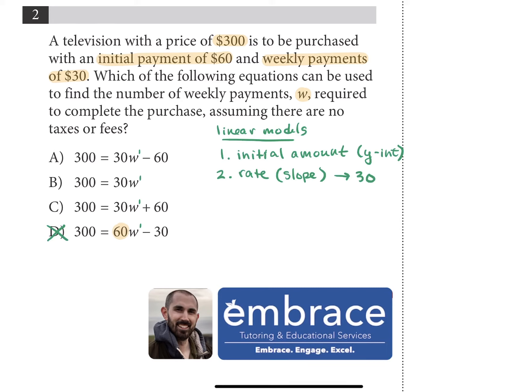Okay, the next thing we have to consider is that initial payment of $60. Now, answer choice B can be eliminated because it doesn't even factor in that initial amount of $60. So now what we have left are these two equations. We have to compare the 30W minus 60 and the 30W plus 60.